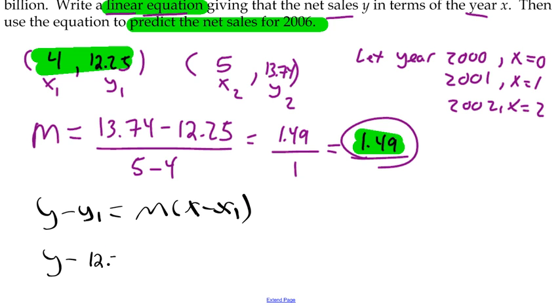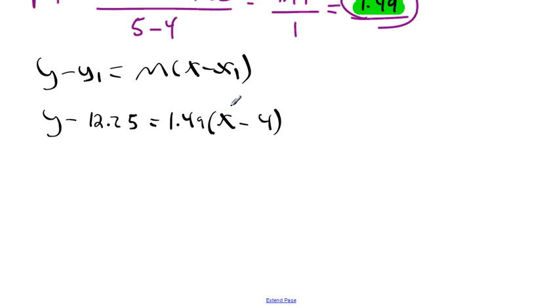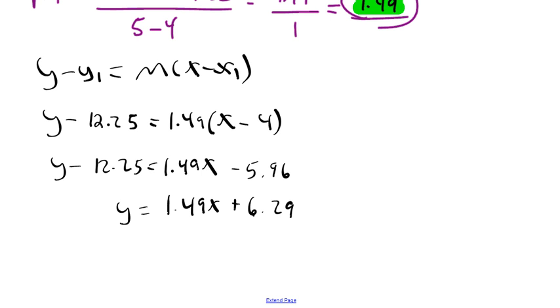Let's go ahead and do that. I'm going to replace y1 with 12.25, m with 1.49, and x1 with 4. So y minus 12.25 equals 1.49 times x minus 4. Let's clean this up. This will be 1.49 times x is 1.49x minus 1.49 times 4 gives 5.96. Lastly, let's add 12.25 to both sides, so we'll get y equals 1.49x plus 6.29.